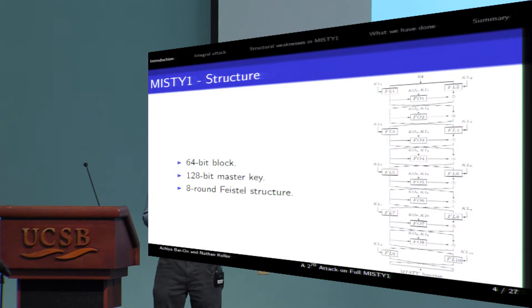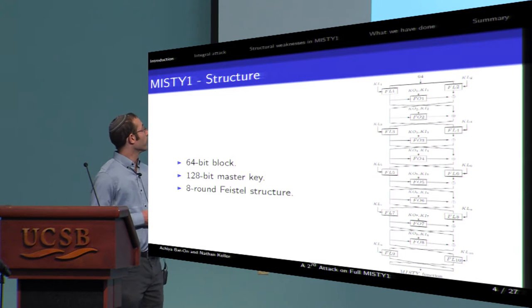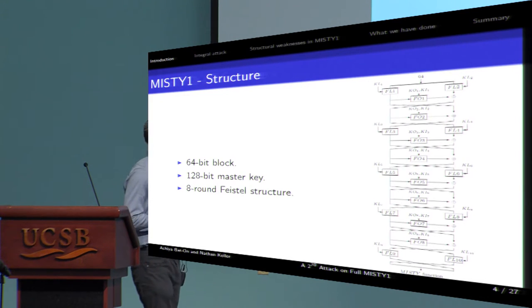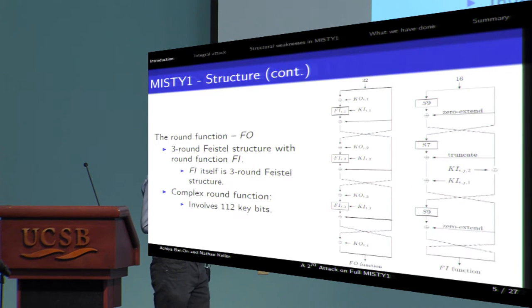The structure of MISTY-1 is an 8-round Feistel structure with 64-bit block and 128-bit key. And its round function is called FO, that is also a 3-round Feistel structure. The same is true for the round function of FO. It is also a 3-round Feistel structure.